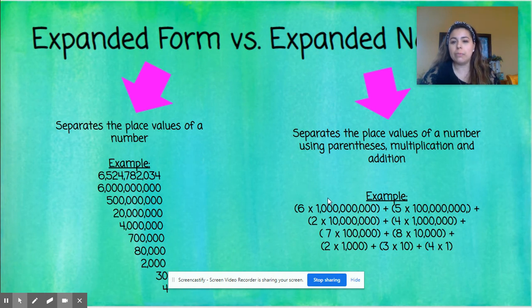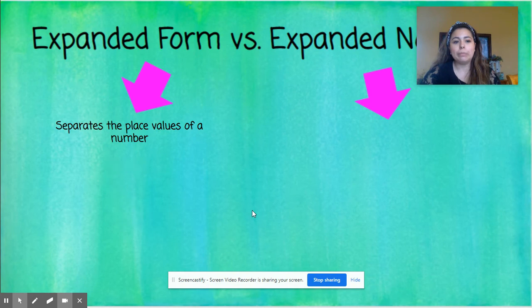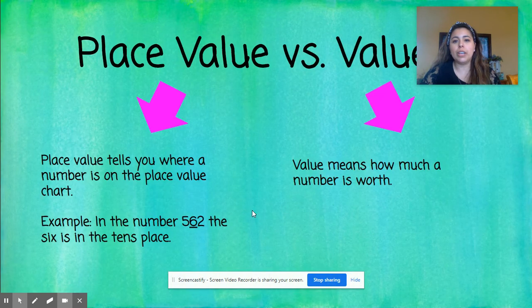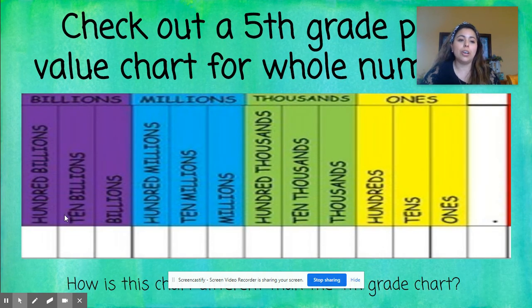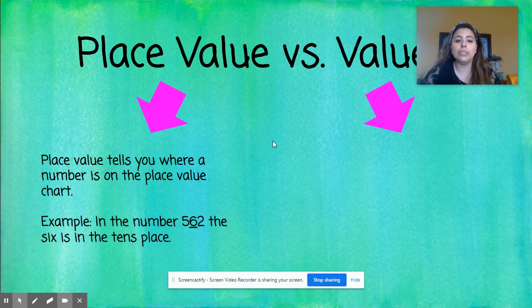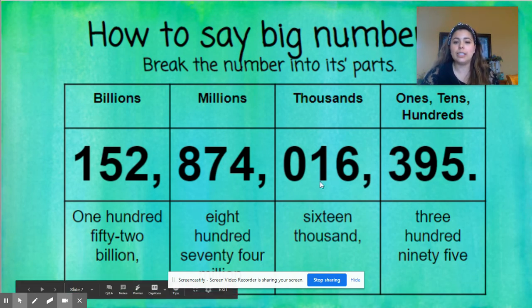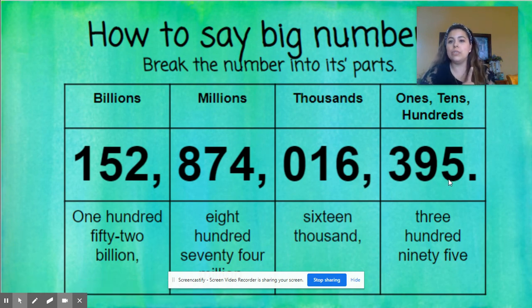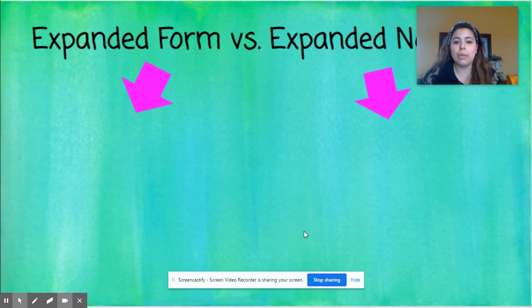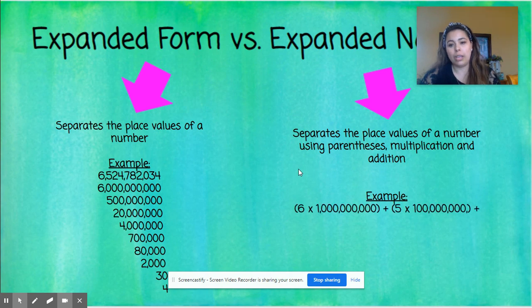Going back to make sure we are clear: you have your place value chart starting from ones going to hundred billions, your three forms — standard, expanded, and word — there is a big difference between place value and value, and you need to know how to say your big numbers. You are responsible for writing one yourself. Do not use any of the numbers I gave you in this PowerPoint for your assignment — I don't want to see six billion five hundred twenty-four million on your paper. Make up your own original number.